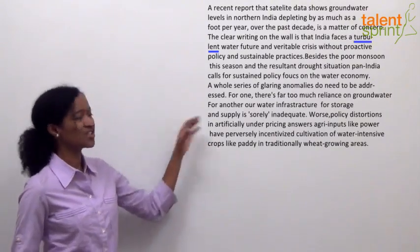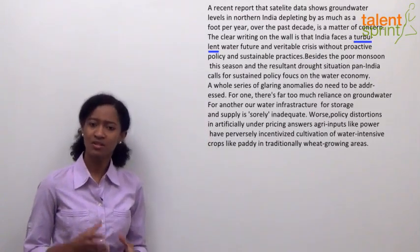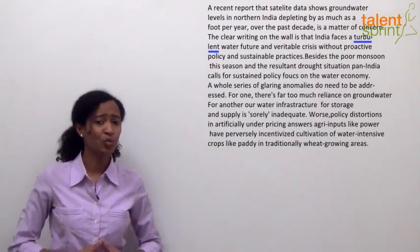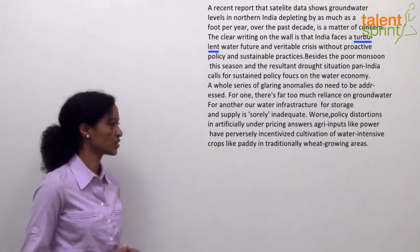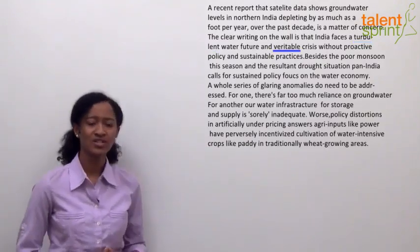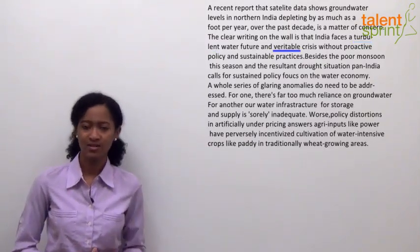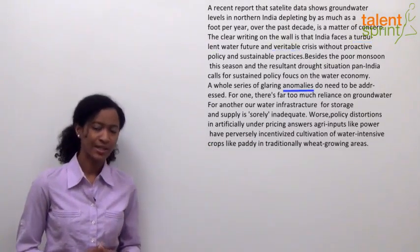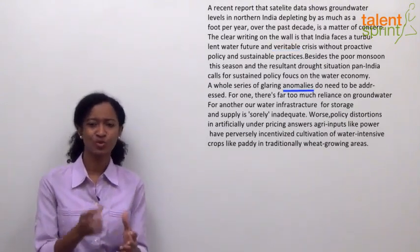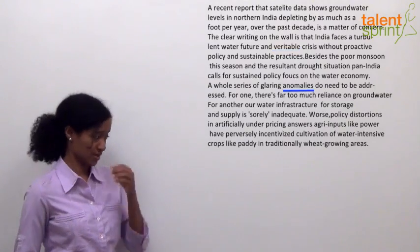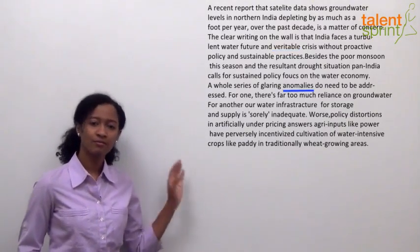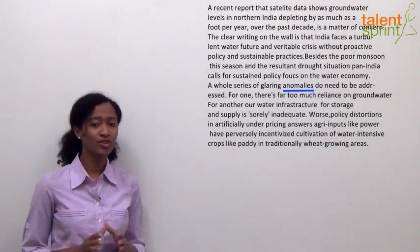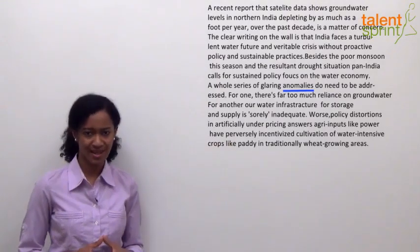Let's understand some words that may hinder our understanding. Turbulent means disturbing — it causes some sort of unrest, like facing inadequate water in the future. Veritable crisis means a real, genuinely serious crisis. Anomalies means deviation or departure from the actual or common form, rule, or order. We've now looked at key words that could pose a problem in understanding the passage as a whole.